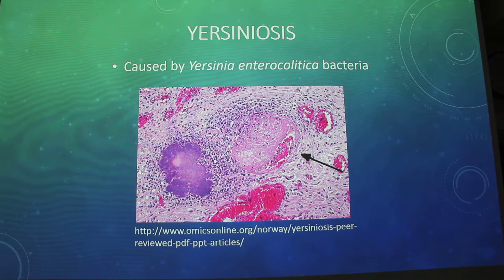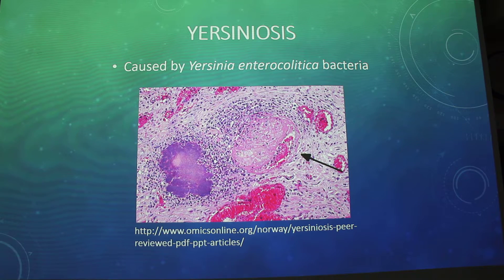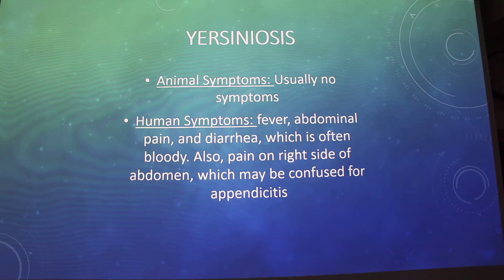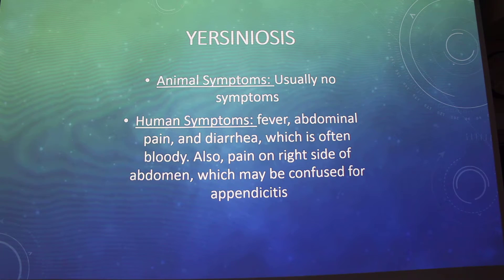So when people eat raw or undercooked meat and ingest it, it can also be transmitted through unpasteurized milk — some people swear by unpasteurized milk, which is a little crazy. For animals, there's usually no symptoms, which makes this one a bit tougher. Human symptoms include fever, abdominal pain, and diarrhea, which is often bloody. There's also pain on the right side of the abdomen, which may be confused for appendicitis.